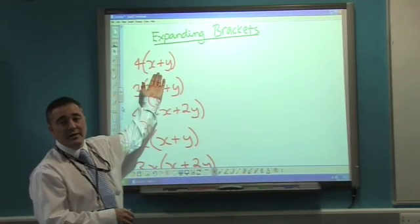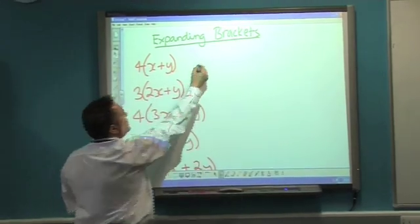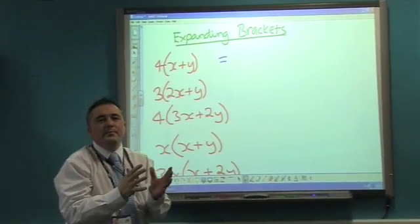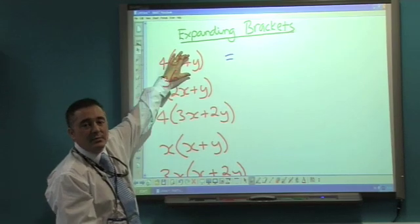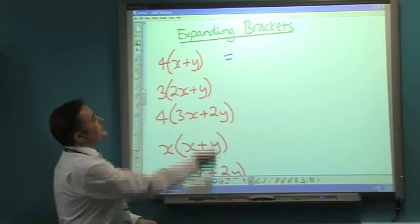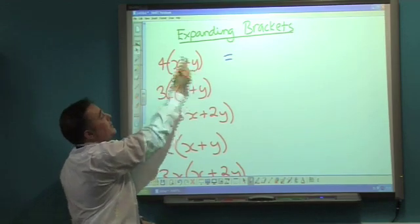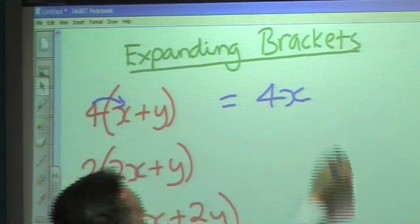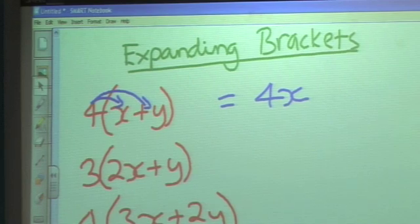When you've got something like this, we need to rewrite it without the brackets. You should always remember: multiply everything outside the bracket by whatever's inside. So I've got a 4 outside the bracket. I need to multiply 4 by x, then 4 by y. So 4 times x gives me 4x, and 4 times y gives me 4y.